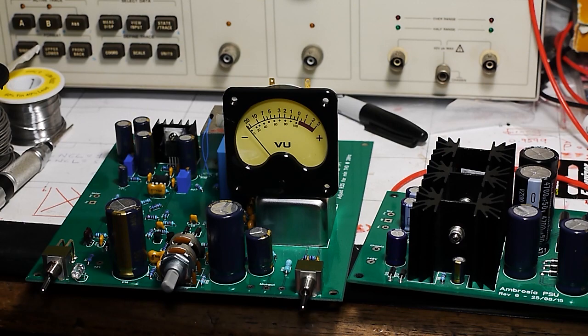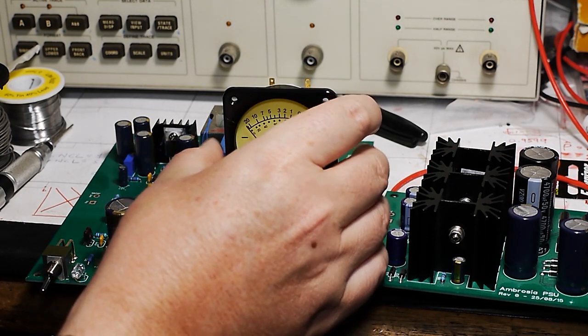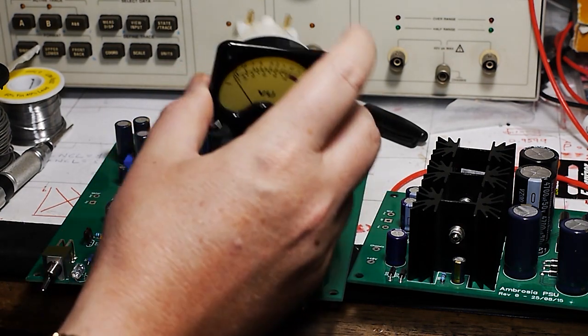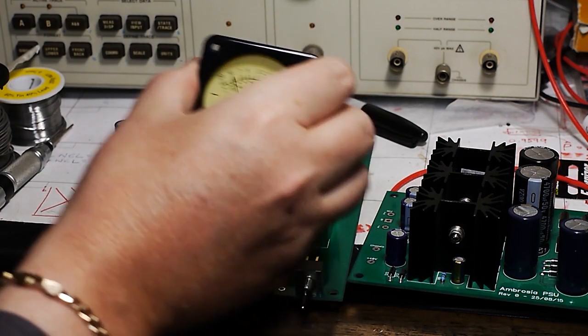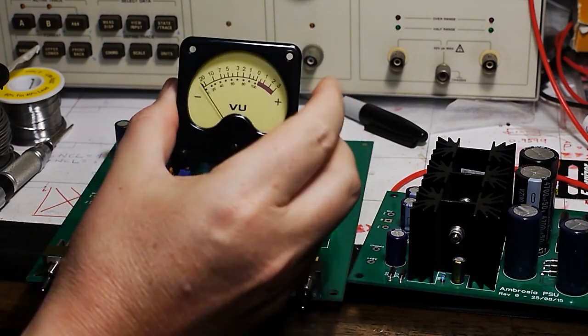And this reminded me of the classic test for whether a panel meter was still working, which is what they call the shorted and shake it test. Because what you'll find is when the meter contacts are just open circuit like that and give it a bit of a shake, the needle moves very freely.